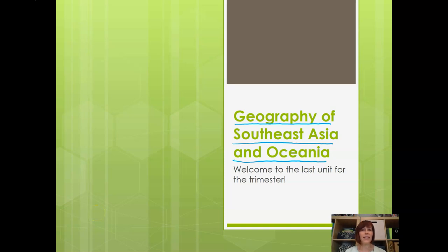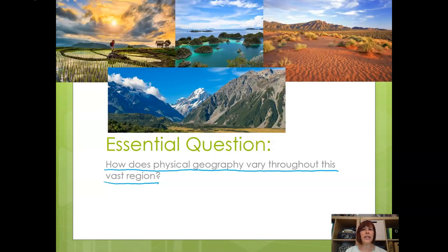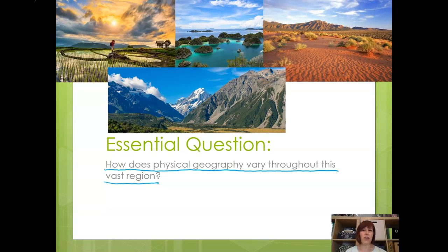Welcome everyone. Today we're going to begin looking at the geography of Southeast Asia and Oceania, and this is the last unit for the trimester. We are very near the end here. Today's essential question is: how does physical geography vary throughout this vast region? We're covering enormous territory with a variety of different types of geography.